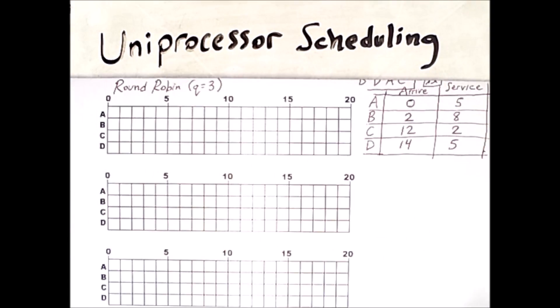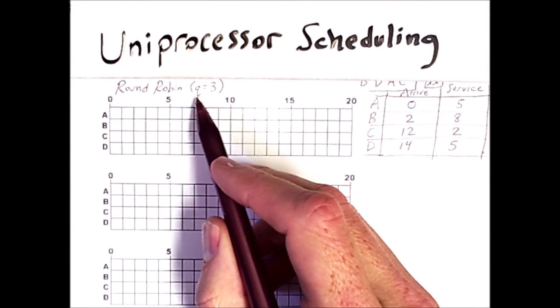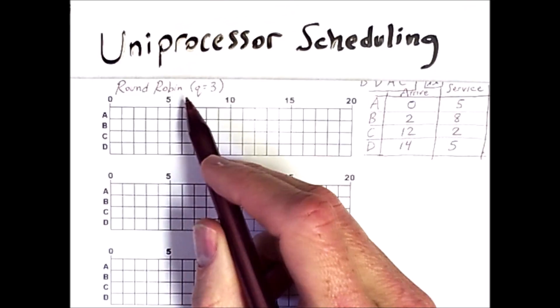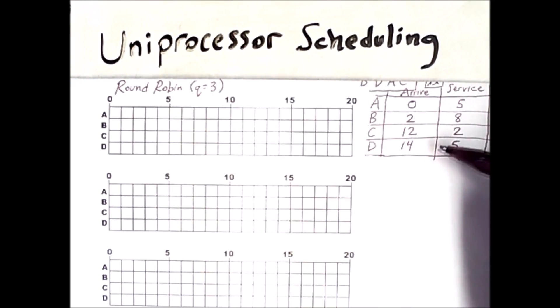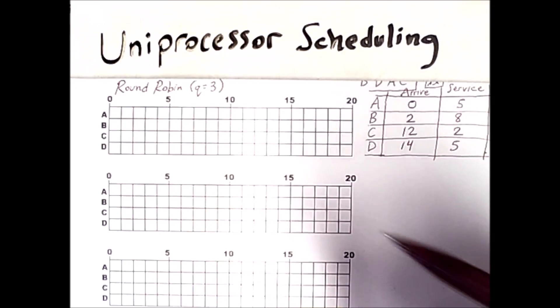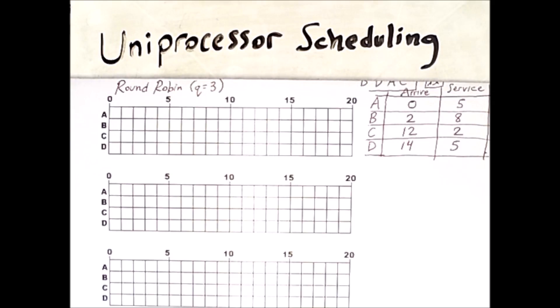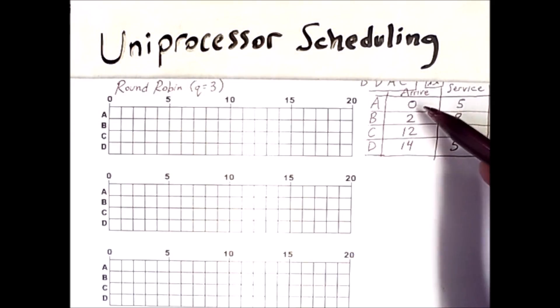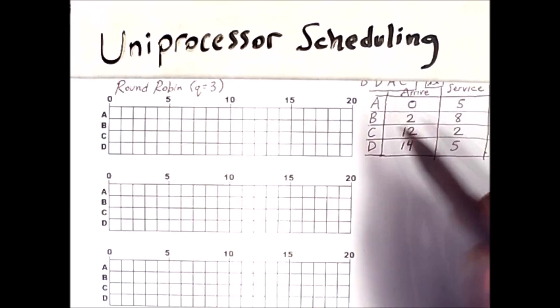Now for this next example, I've both changed the time quantum for round robin and I've changed my process table. So notice that the arrival times and the service times are different. And this will create some interesting scenarios in this example that I'll show you. So with round robin, once again, A arrives first at time zero. And because the quantum is three, it'll get to run for three units.